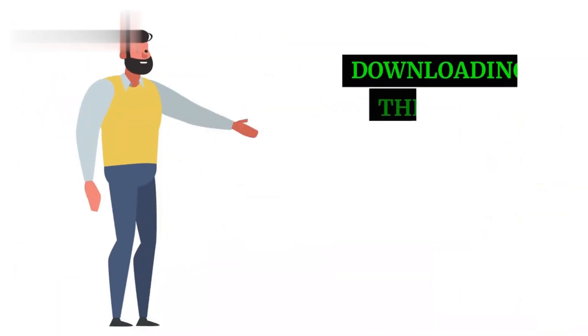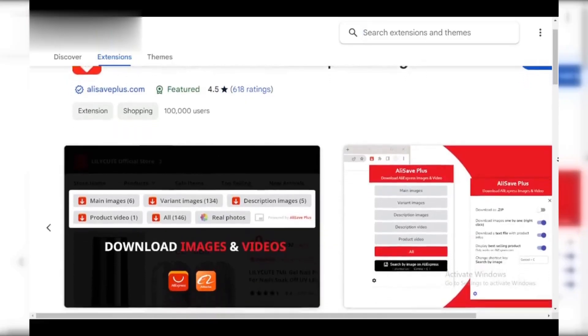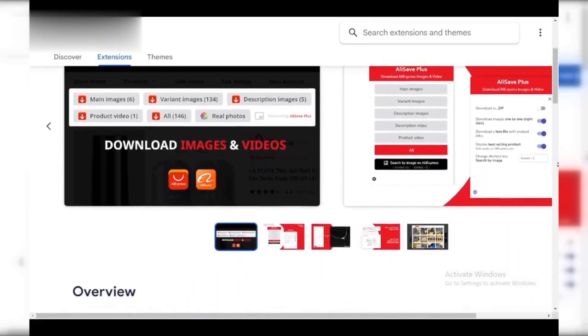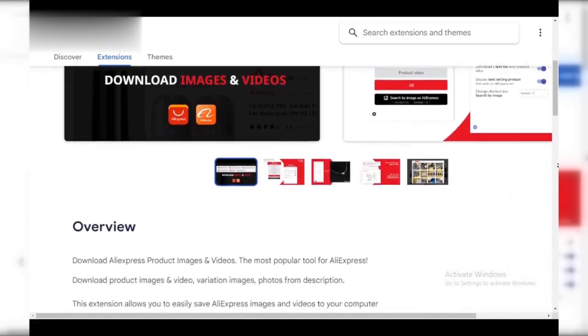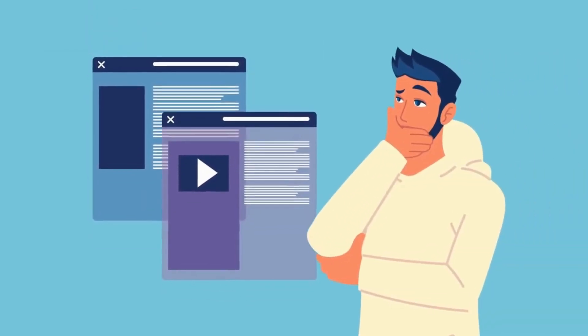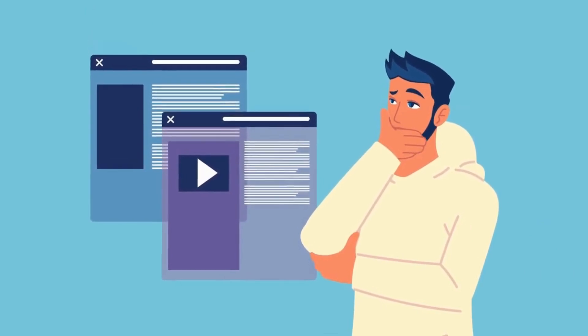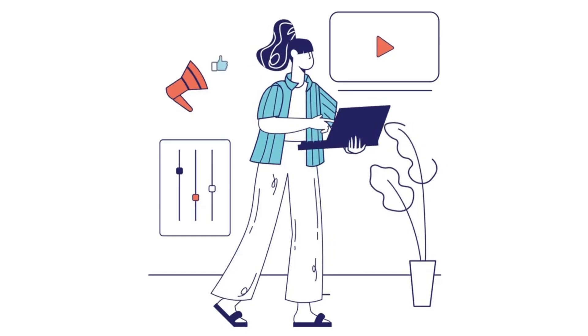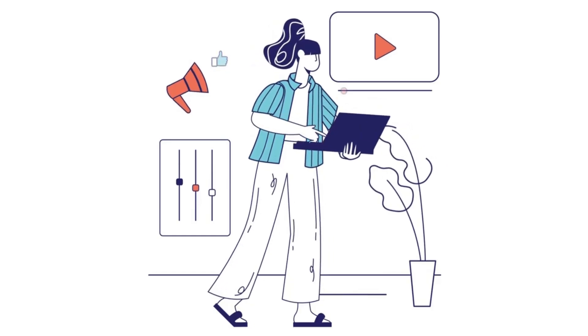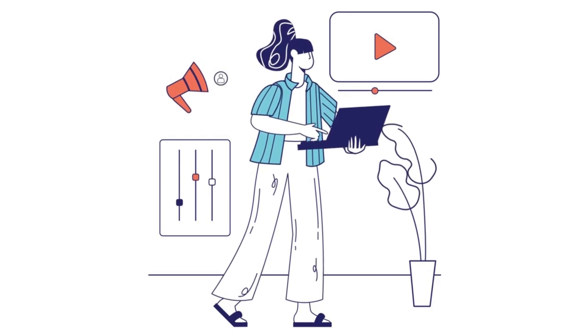Step 3: Downloading the video. Now there are two options. Option 1: you can use a browser extension like Alisave+, which allows you to download Alibaba images and videos with a single click. Option 2: if you don't have an extension, head over to a free video downloader website — search for Online Video Downloader — paste the copied link into the website's bar and choose the download quality.